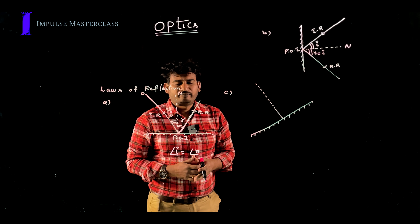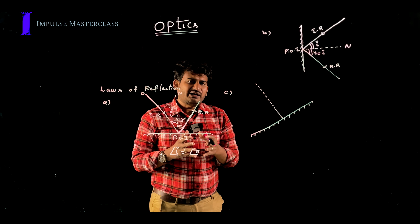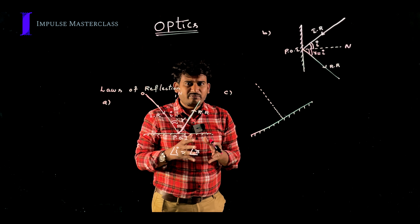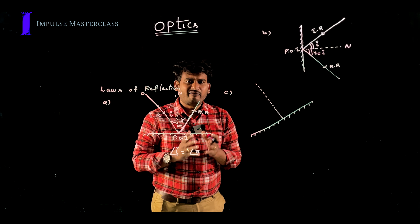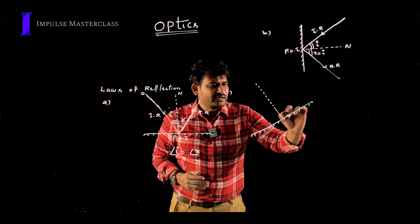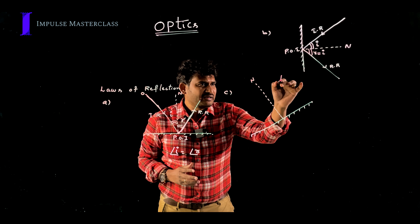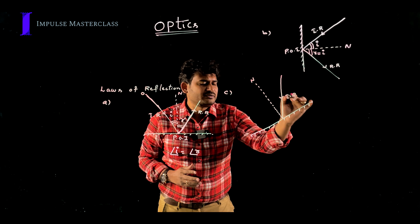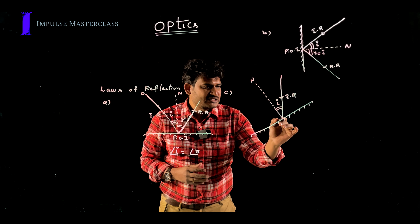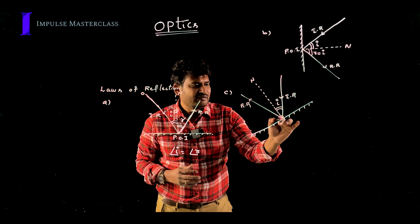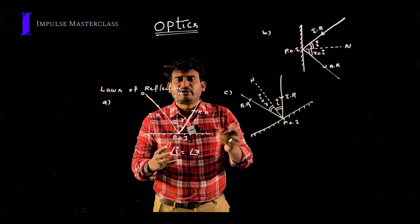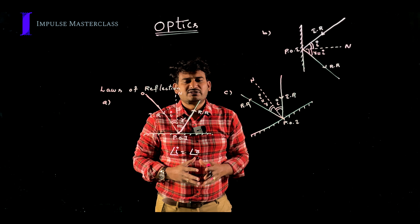For the third orientation, the mirror is kept in a slant position. Whatever may be the orientation of the plane mirror — horizontal, vertical, or slant — first of all you should draw the normal, which is always perpendicular to the plane mirror, before calculating the angle of incidence. A light ray comes in as the incident ray, makes some angle with the normal (angle of incidence), reflects at the point of incidence, and the angle between the reflected ray and the normal is the angle of reflection.